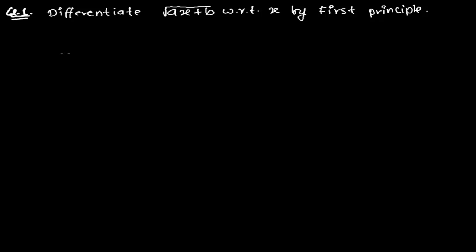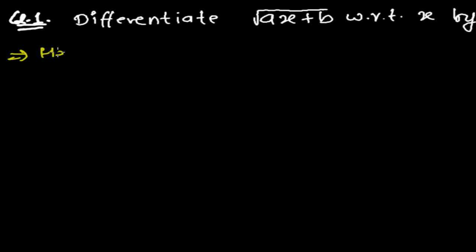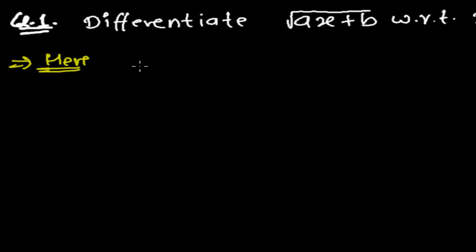Hi friends, welcome once again to another episode of Derivative. Here the question is asking us to differentiate root over ax plus b with respect to x by the first principle method. In recent videos we learned a lot about the first principle method, so here also we are going to solve another problem — we are going to find out the derivative of this function, root of ax plus b.